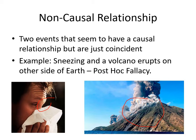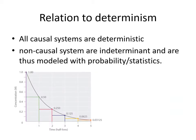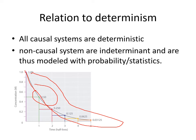There are a lot of post hoc fallacies out there. Causal systems are deterministic, so causality and determinism are highly related. Non-causal systems are indeterminate and are thus modeled with probability and statistics. If you do not have a causal deterministic system, you're at the mercy of using probability and statistics to try to model it. This here is the decay graph for radioactive isotopes — given an amount of radioisotope, you can compute the half-life. This is a statistical model. You can see there's a differential equation model, but it's still based on the quantity of material remaining, so it's statistical at its very heart.